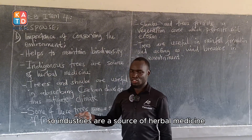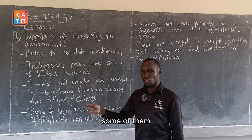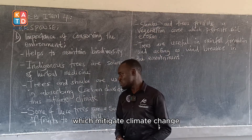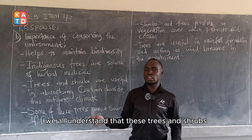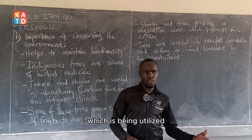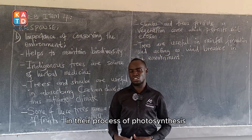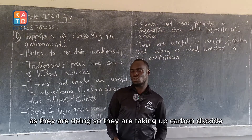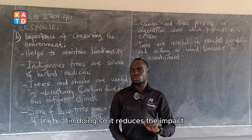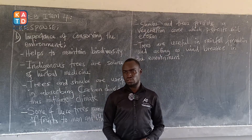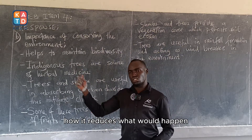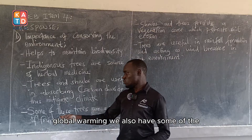Indigenous trees are a source of herbal medicine. Additionally, trees and shrubs are useful in absorbing carbon dioxide, which mitigates climate change. These trees absorb carbon dioxide during photosynthesis to manufacture their food, and in doing so they reduce the amount of carbon dioxide in the atmosphere, reducing the impact of carbon dioxide on our climate and helping to prevent global warming.